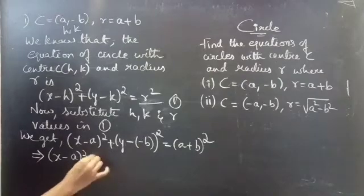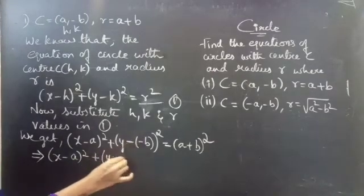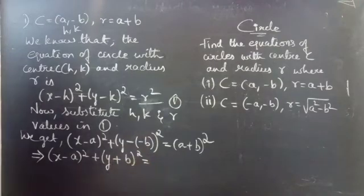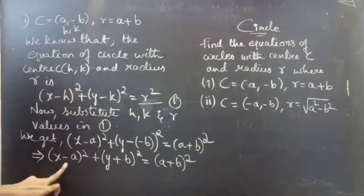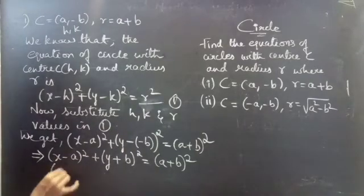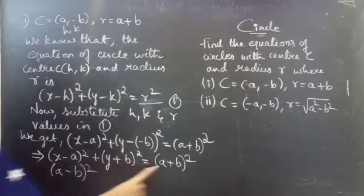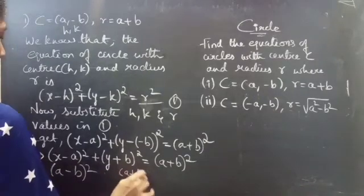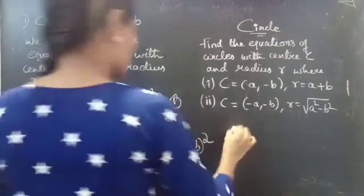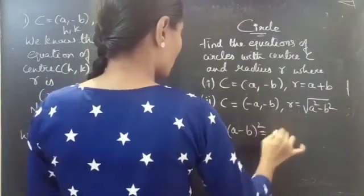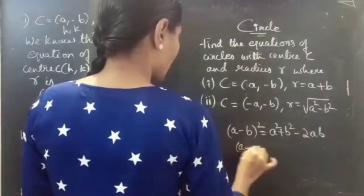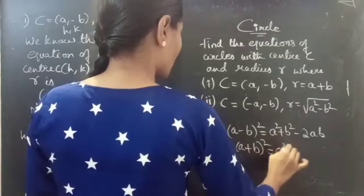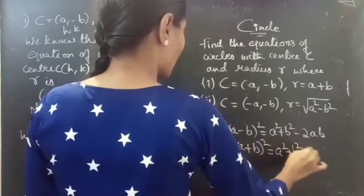So we can write: x minus a whole square plus y plus b whole square equals to a plus b whole square. The left-hand side terms are of the a minus b whole square form. We know that a minus b whole square equals to a square plus b square minus 2ab, and a plus b whole square equals to a square plus b square plus 2ab.